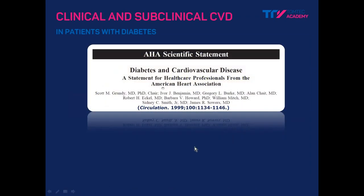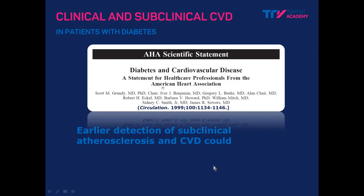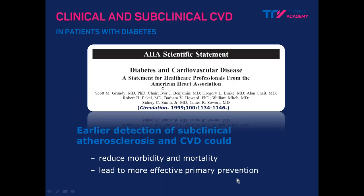Looking at this American Heart Association statement about diabetes and cardiovascular disease — it's still valid — it states that early detection of subclinical atherosclerosis and cardiovascular disease could reduce morbidity and mortality for diabetic patients and could help plan more effective prevention or treatment.